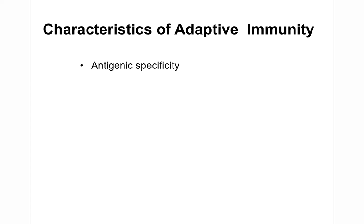Antigenic specificity means the immune response that is generated is specific for the antigen that stimulates or activates the immune system. The second characteristic is recognition between self and non-self — the immune system is able to discriminate between self antigens and non-self antigens, and can mount an immune response only against non-self antigens without causing any damage to self antigens.